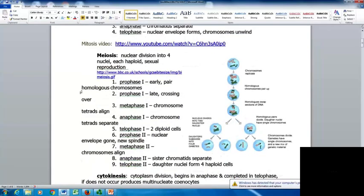With meiosis, you're going to have a nuclear division where you divide the chromosomes and reduce their number. You divide the nucleus into four nuclei, each one haploid. This is how we do sexual reproduction.